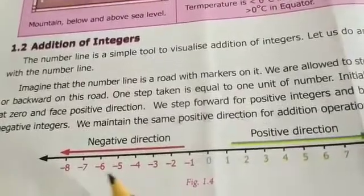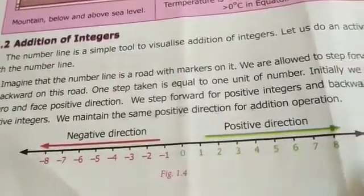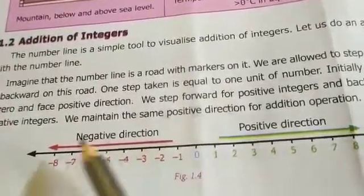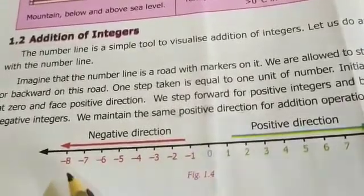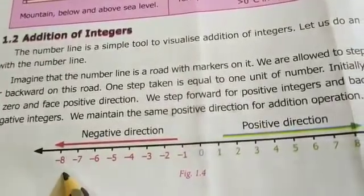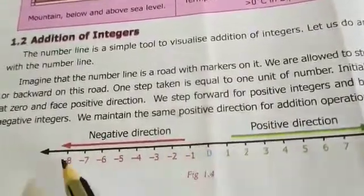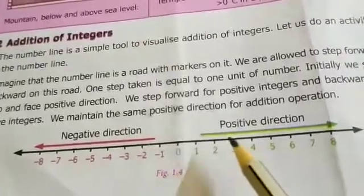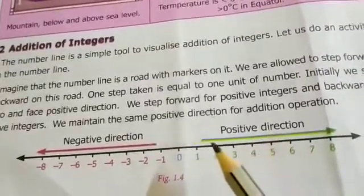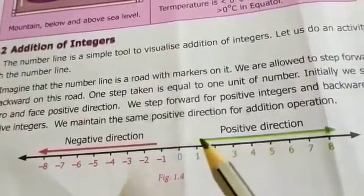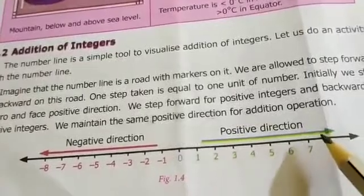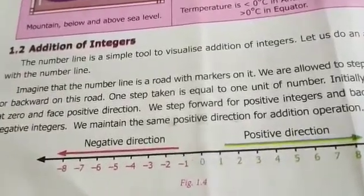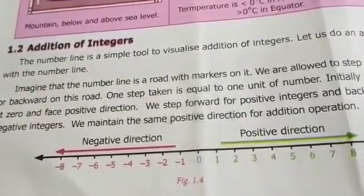Addition of integers on the number line: negative direction means moving right to left, while positive direction means moving left to right. This is the number line system.